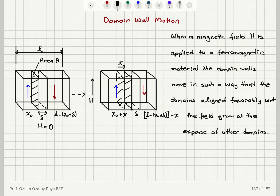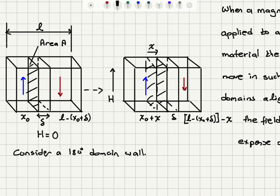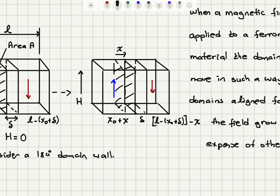As a demonstration of this, let's consider a 180-degree domain wall. Before I turn on the field, the domain wall is at its original position. The domain wall has width delta. The upward-pointing domain has a length x₀ and the other one has a length l minus x₀ plus the domain wall width delta. The domain wall has an area A. When I apply a magnetic field H, the domain wall moves to the right, so the domain aligned with the magnetic field grows in size and the one anti-parallel to the field shrinks.